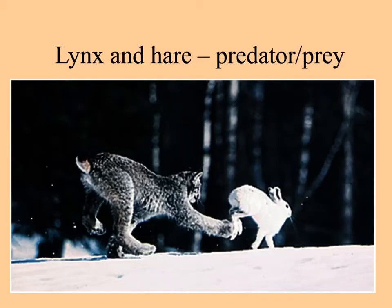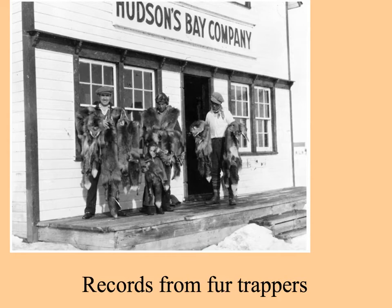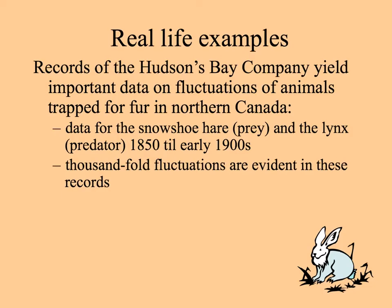Some of the most interesting data we have are from long-term monitoring of lynx and hare populations. The lynx is the main predator of the snowshoe hare, and the hare is the main food of the lynx. These records came from the Hudson Bay Company, where they had records of what fur trappers caught in their traps — data from northern Canada from 1850 to the early 1900s. We can see that the numbers went up and down many times in these records.